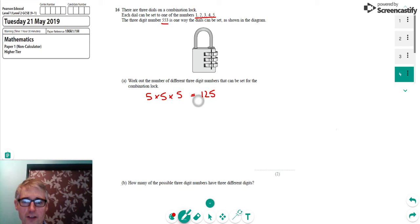And that is the total number of different combinations we can get from this lock: 125, simply by multiplying the digits on each one together. So 5 times 5 times 5.